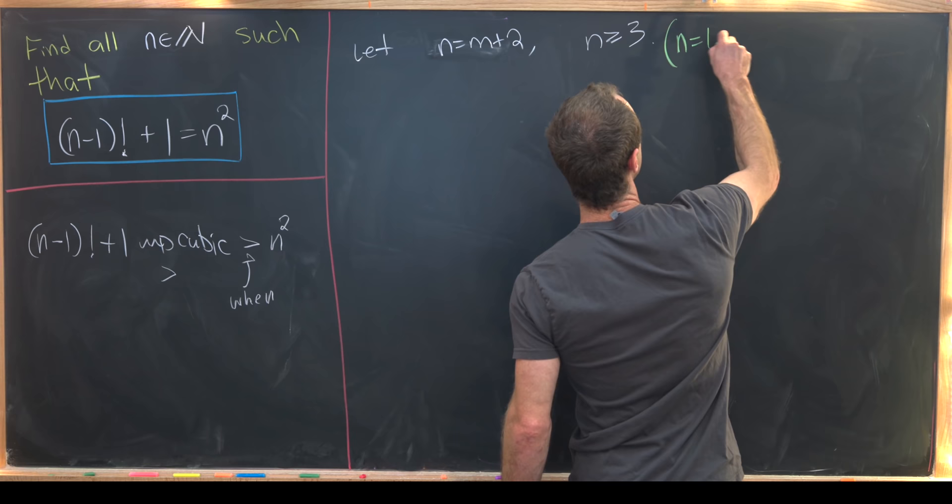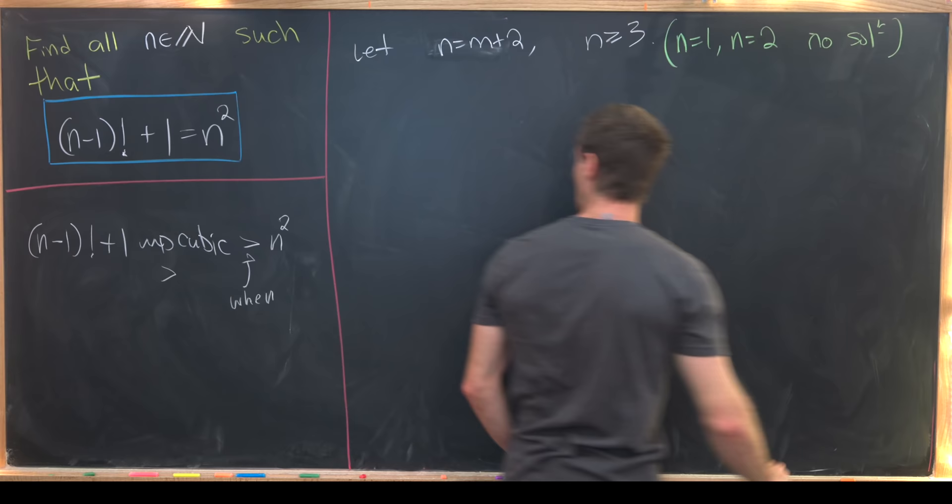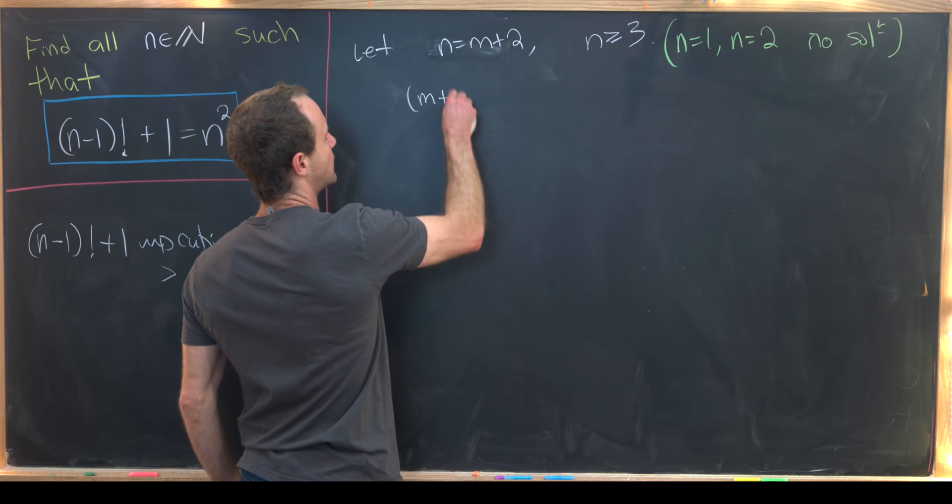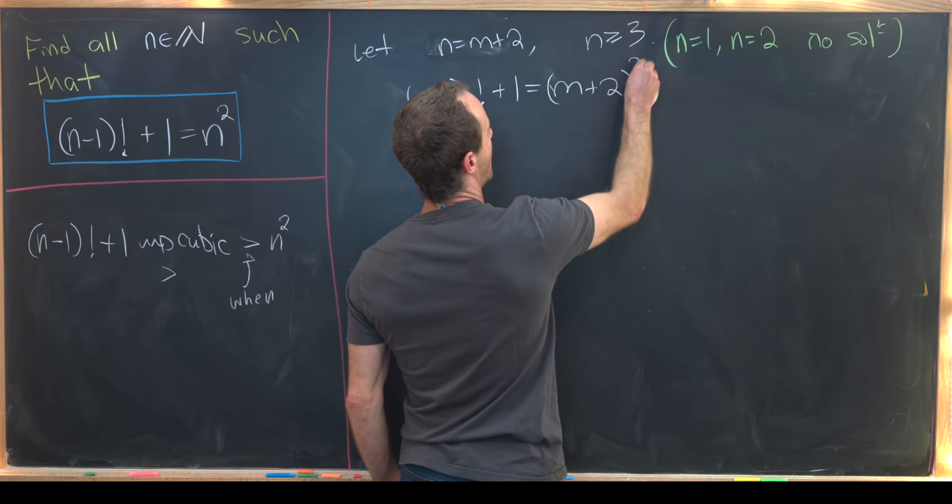Maybe I'll let you guys do that. n equals 1 and n equals 2 give us no solution. Okay great. And now we'll plug this substitution into our equation and see what it looks like. So instead of n minus 1 we will have m plus 1 factorial plus 1 equals m plus 2 quantity squared.